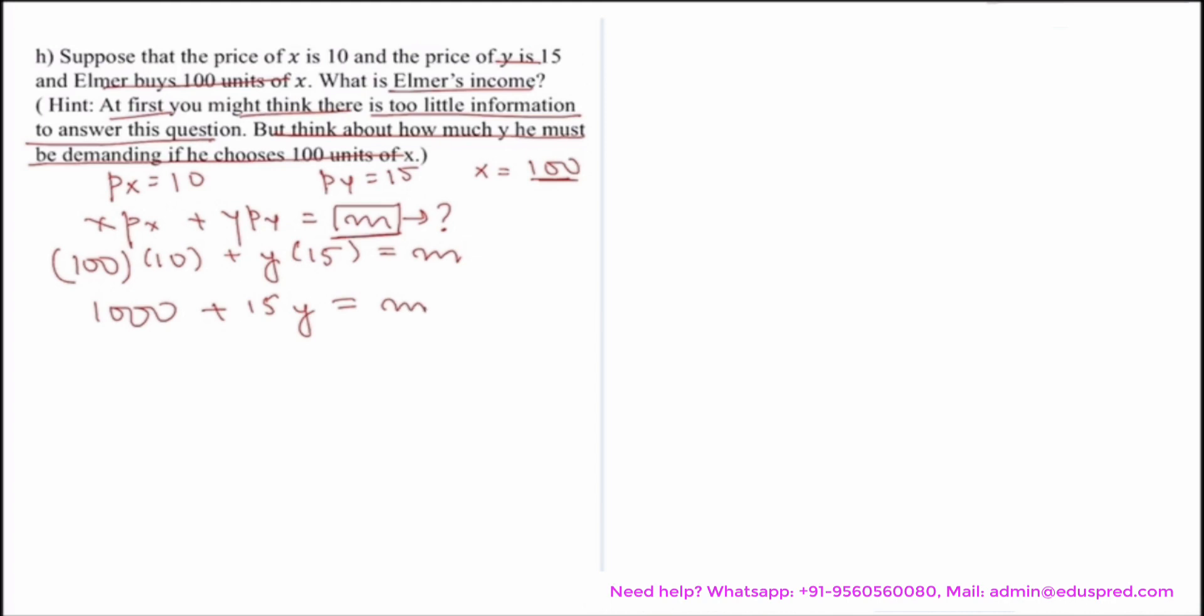Now we have one equation but two variables to find. The utility is of the form u(x,y) equals minimum of x comma y squared. In case of perfect complements, the consumer always consumes at the kink.